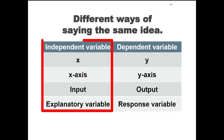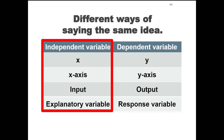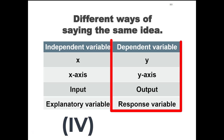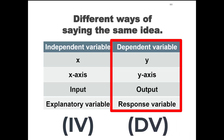In any of these situations, if you're talking about x, x-axis, input, or explanatory variable, it's still all the independent variable, or the IV. For y, y-axis, output, response variable — it's still the dependent variable, or DV.